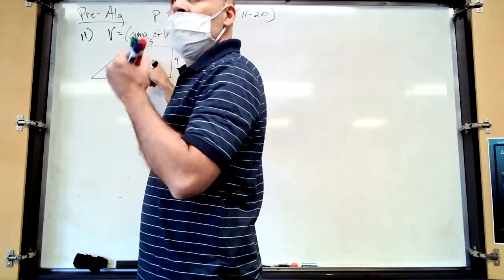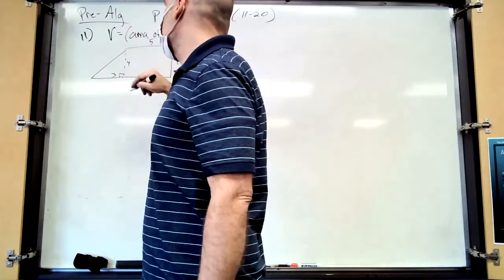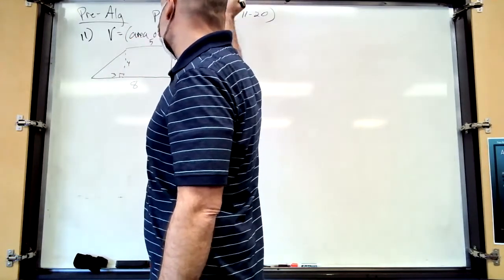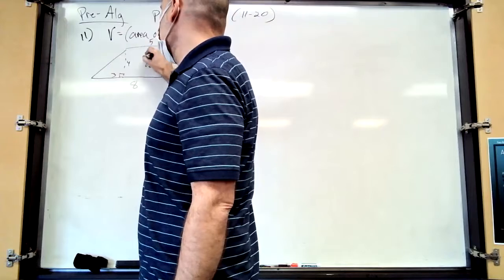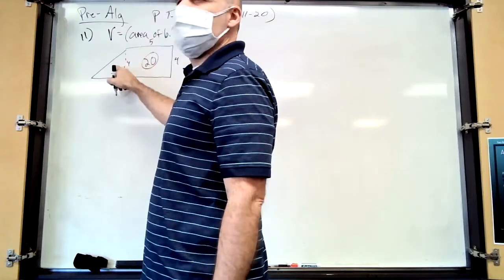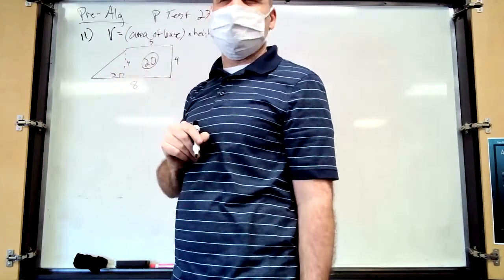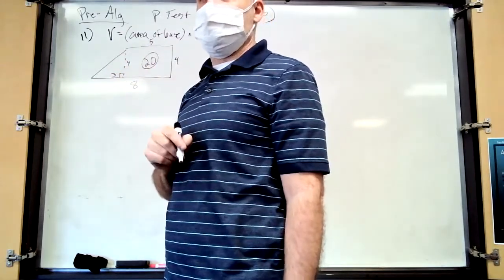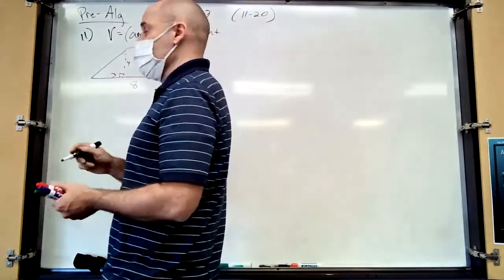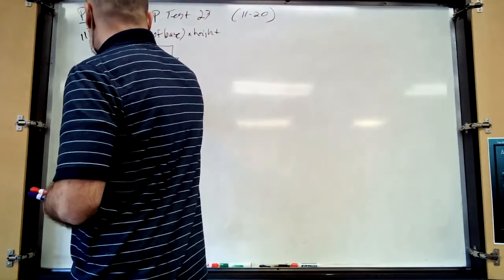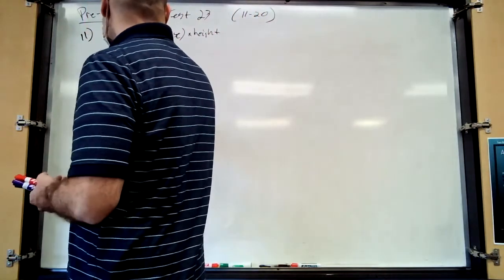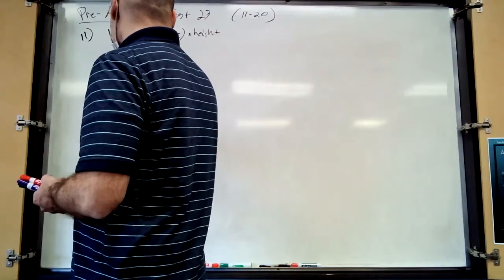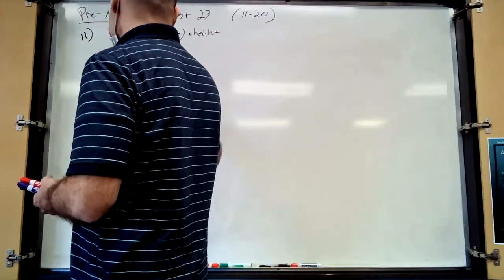What's the area of the rectangle? That's 20. What about the area of that little triangle? Base times height divided by 2 — don't forget to divide by 2. Good job. So that's 20 plus 6, times the height which is 11.